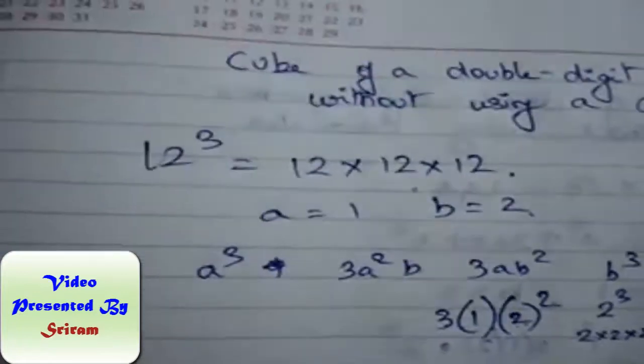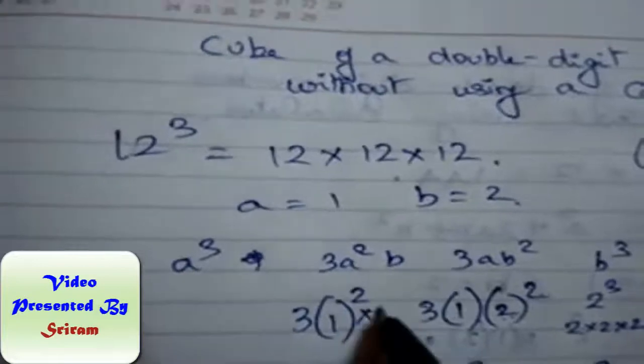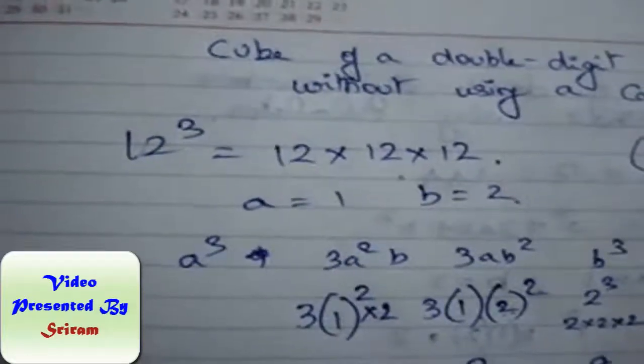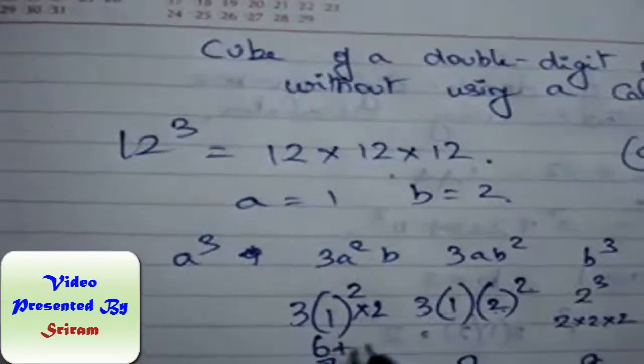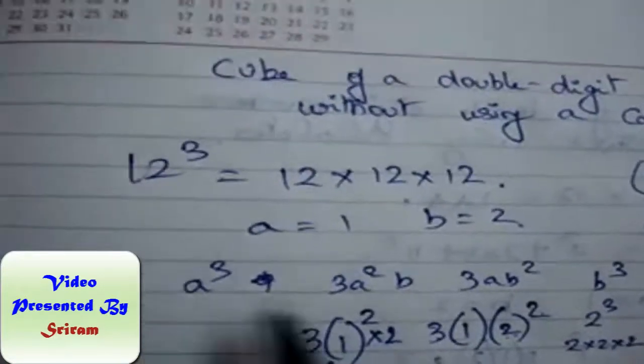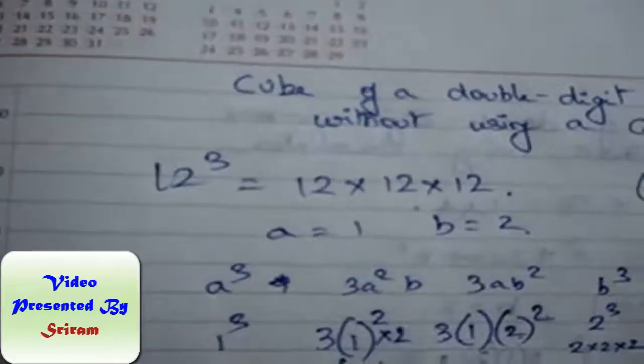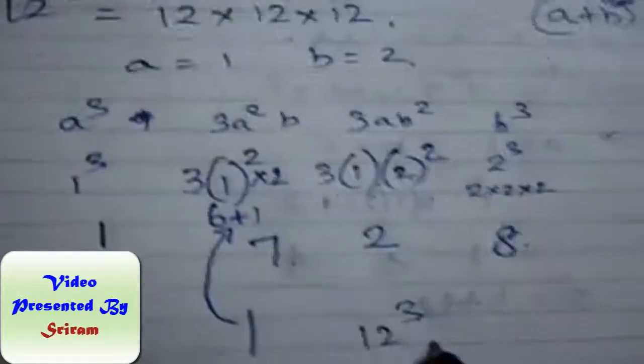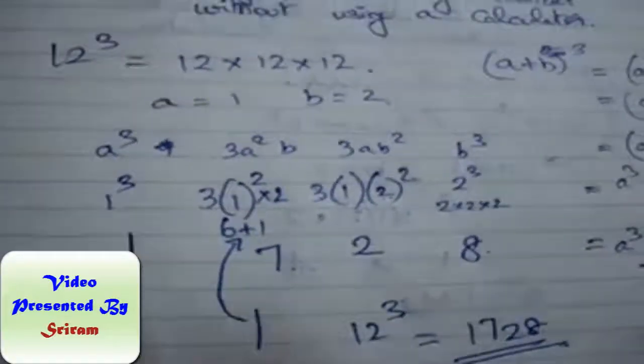So 12, one is carried over. And 3a² into b, so it is 6, 6 plus 1 is 7. And a³ is 1³, which is 1. So 12 cube is 1728. Thank you.